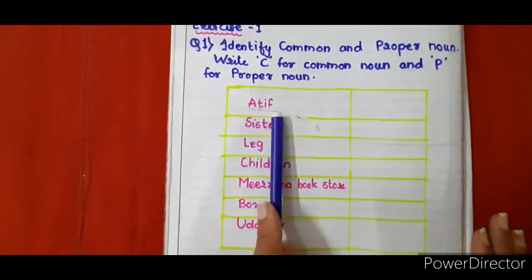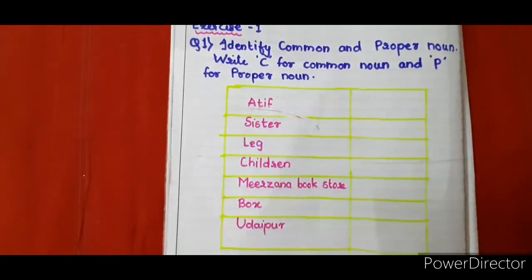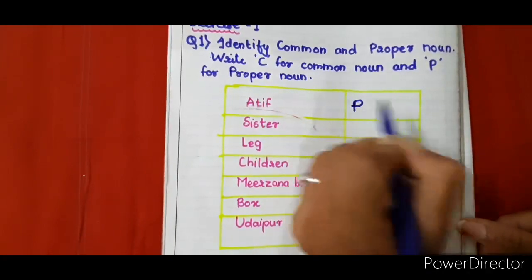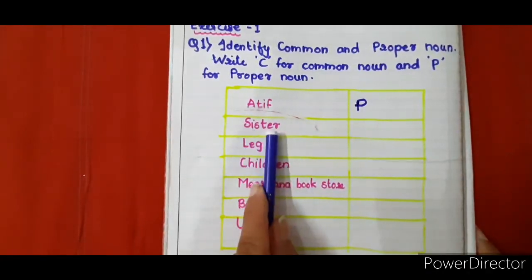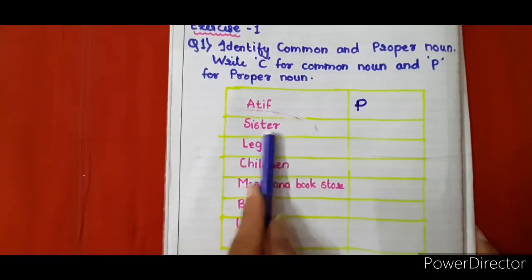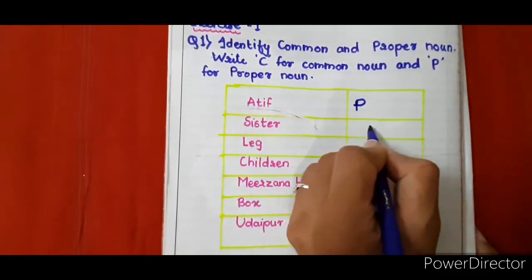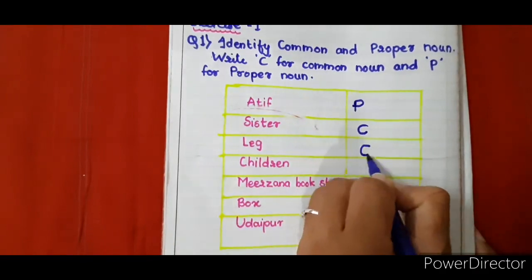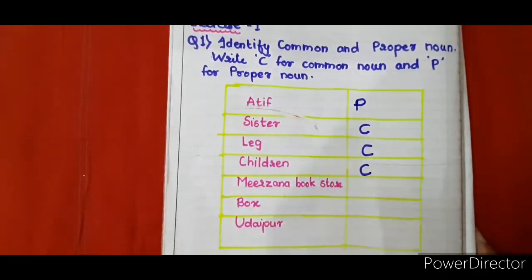Now, Atif is a particular name given to a boy, so it will be a proper noun. Second: sister. It is a common noun because it is given to all kinds of sisters or the same kind of girl. It is a common noun. Children is also a common noun.